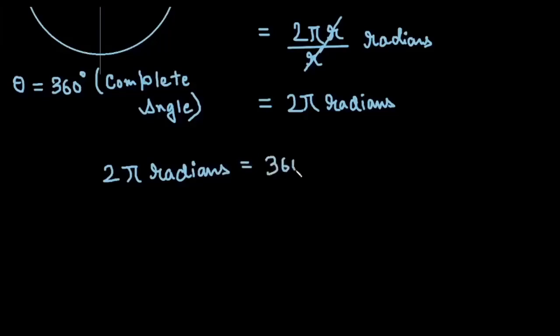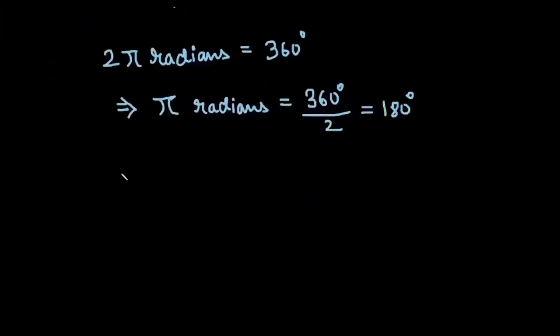Let us write that equation. We can simplify both sides by dividing by 2, and we get π radians equals 180 degrees. This is one of the most basic concepts of radians: π radians equals 180 degrees.